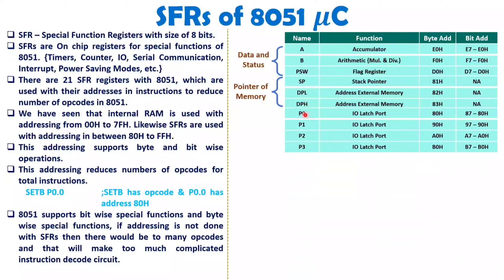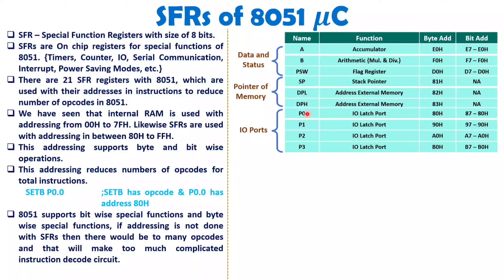8051 has 4 I/O ports: P0, P1, P2, and P3. All I/O ports support bit addressability. So you can perform single-bit set and reset operations — like SETB P0.0 — on all ports, as well as full 1-byte operations.